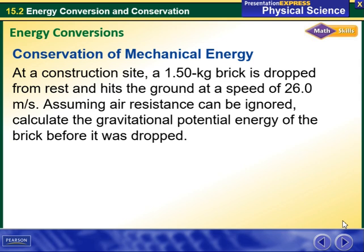We have an example here. At a construction site, a 1.5 kilogram brick is dropped from rest and hits the ground at a speed of 26 meters per second. Assuming air resistance can be ignored, calculate the gravitational potential energy of the brick before it was dropped.